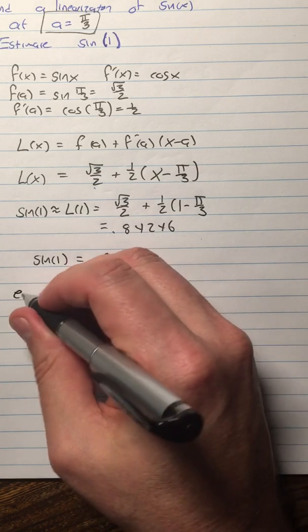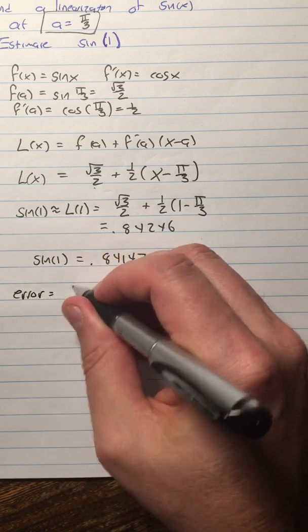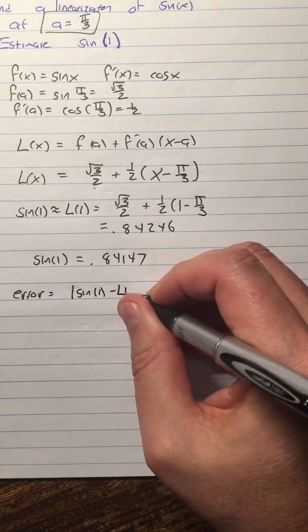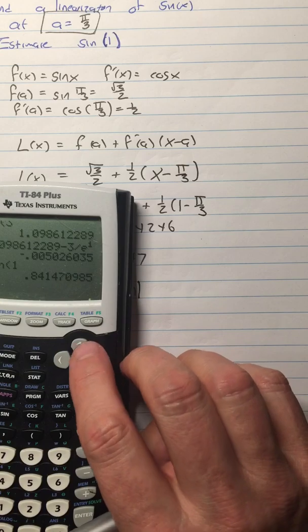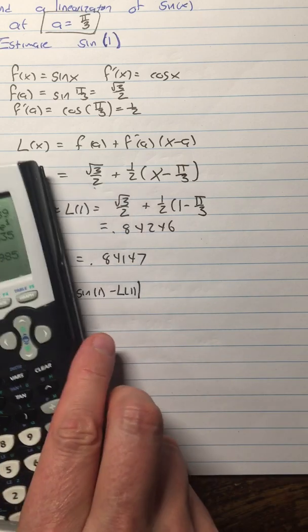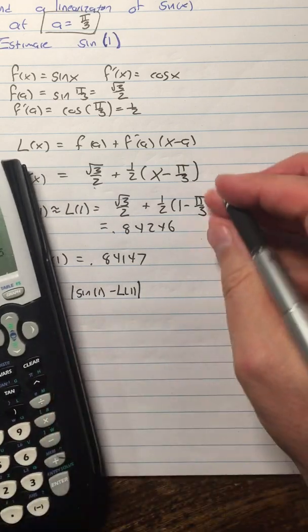So we say, we're going to say that the error is equal to sine of 1 minus L(1). Let's see, I think I did, I guess I didn't do L(1) on here. I'll have to do it now.